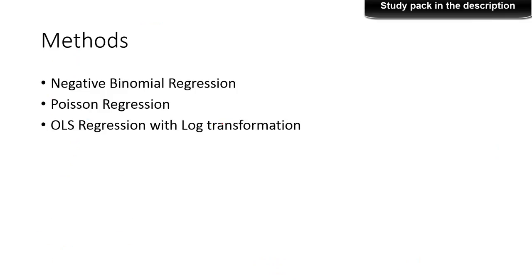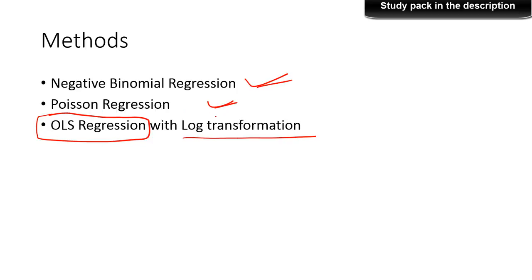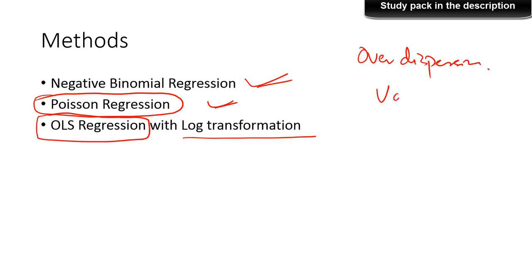In such a case, the methods to consider are: negative binomial regression, Poisson regression, and OLS regression with log transformation of the dependent variable. We are ruling out Poisson regression because there is over-dispersion — the variance is much higher than the mean. For this demo we will go with negative binomial regression. You can also build an OLS regression with log transformation and compare it with the negative binomial regression model.